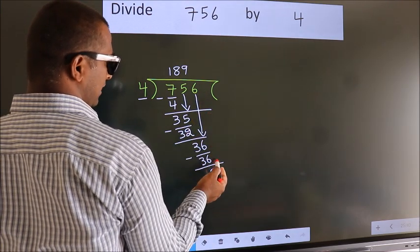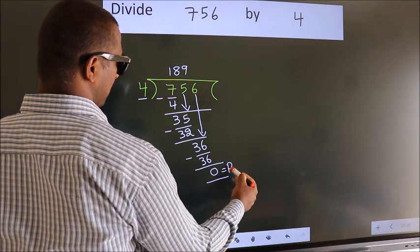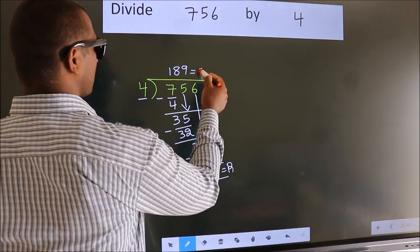No more numbers to bring it down. So, we stop here. This is our remainder. This is our quotient.